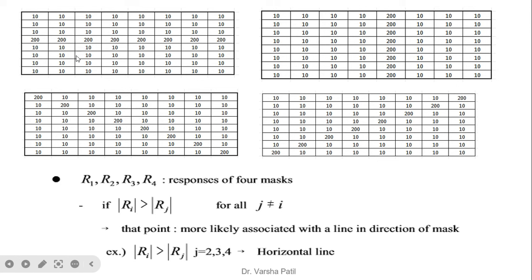This 8 by 8 image contains all types of edges: horizontal, vertical, minus 45, and plus 45. When we apply the horizontal mask, horizontal edges are extracted. When we apply the vertical mask, vertical edges are extracted. Similarly for minus 45 and plus 45. Applying all four masks and taking the maximum response at each point gives the final result. The image is very small, so continuity or smoothness is limited; with a 128 by 128 image, better results would be visible. This concludes point and line detection masks.